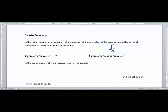Cumulative frequency is adding up your values of F. Cumulative frequency is the accumulation of the previous relative frequencies. Cumulative relative frequency is going to be taking your sums of F and dividing it by N.